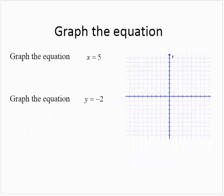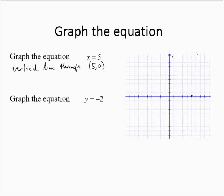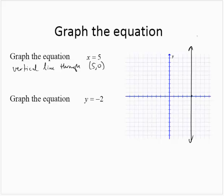Let's see a couple more examples. Graph the equation x equals 5. x equals 5 is a vertical line through (5, 0). So from the origin, assuming a scale of 1, we count to 5, 0 and draw the vertical line through that point. Here's the vertical line through (5, 0) — this is the line x equals 5.